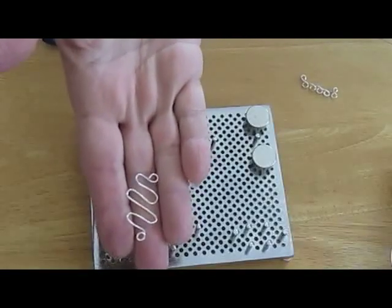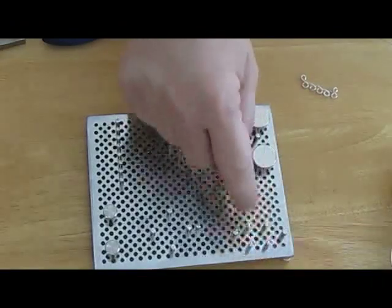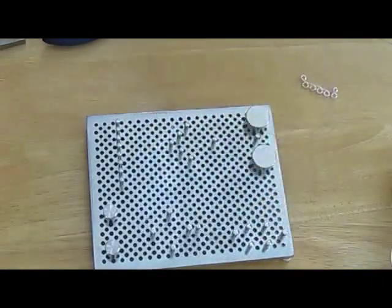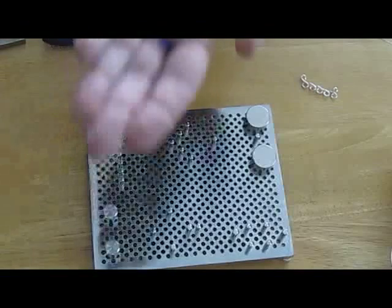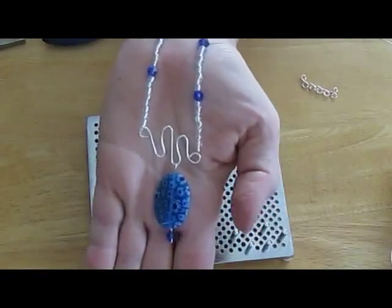This is called a snake pattern, and it's made by zigzagging your wire back and forth between these pegs. And I've used it in a necklace to hold the focal pendant.